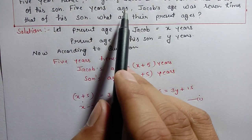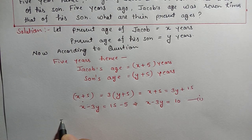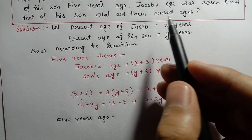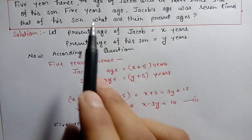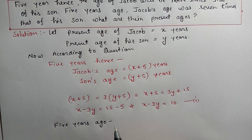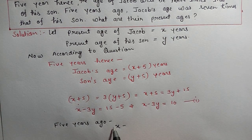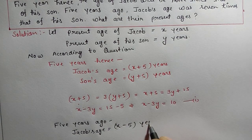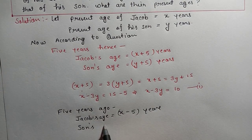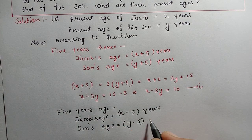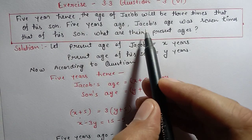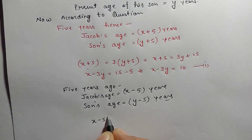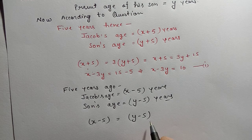Now for the second condition — five years ago. Five years ago, Jacob's present age is x, so five years ago Jacob's age was x − 5. Similarly, his son's age five years ago was y − 5.